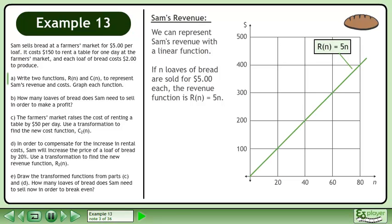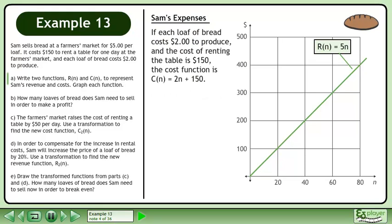Draw the revenue graph. If each loaf of bread costs $2 to produce, and the cost of renting the table is $150, the cost function is C of n equals 2n plus 150. Draw the cost graph.